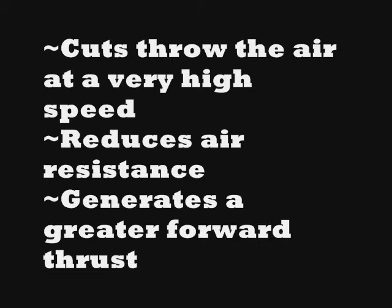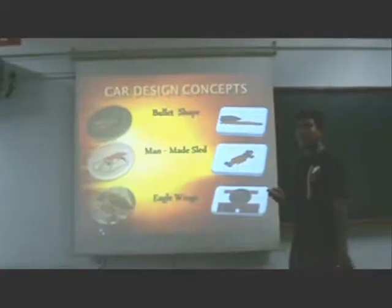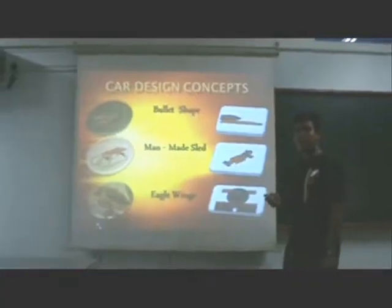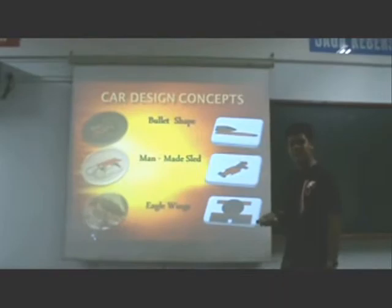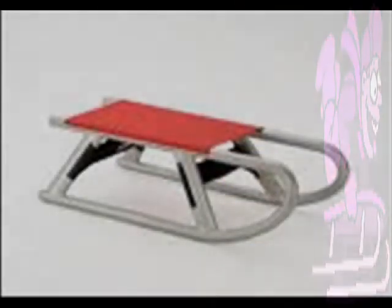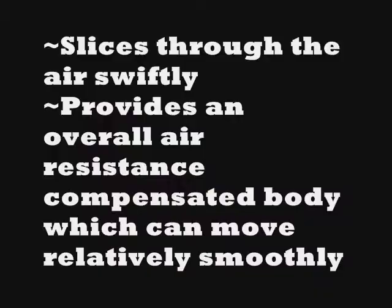For the body, we use the shape of the man-made sled because the curved shape of the sled enables it to be more aerodynamic as it moves. This concept enables it to cut through the air smoothly and swiftly, and the drag will be reduced greatly.